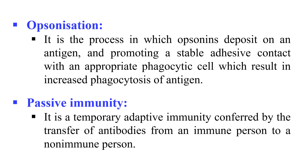Next, Passive Immunity. It is an immunity which is developed due to the transfer of preformed antibodies from an immune person to a non-immune person. In passive immunity, you just transfer the preformed antibodies, whereas in active immunity, you transfer the antigen and the antibody is developed within the host.